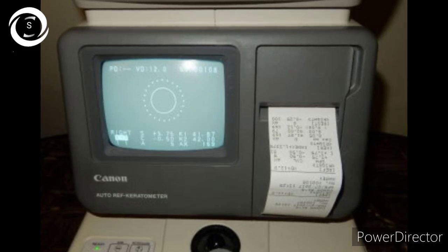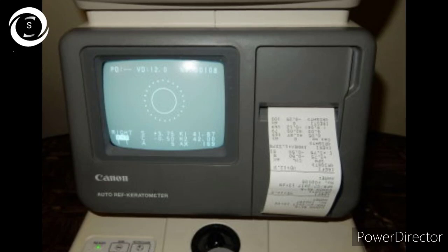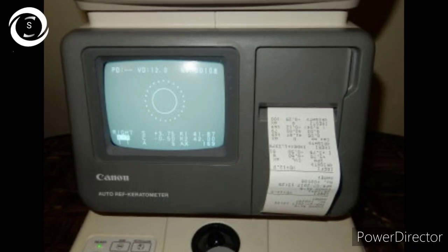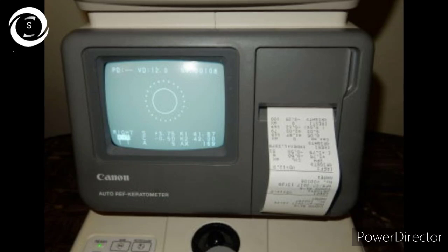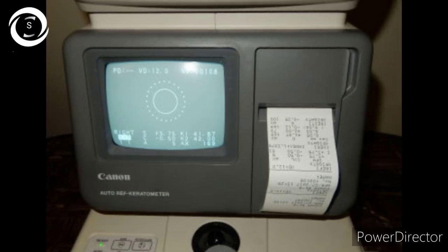Uses of keratometry include: measuring the corneal radius of curvature needed for contact lens fittings, providing central corneal power in diopters, measuring corneal astigmatism when there is a difference between horizontal and vertical axis readings, and determining the shape of the cornea in keratoconus and keratoglobus.